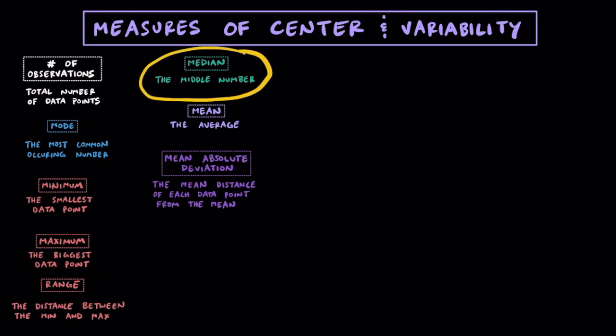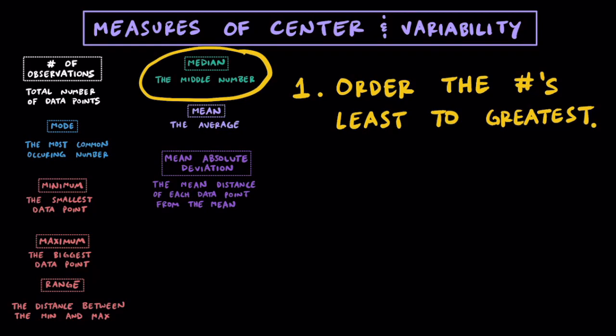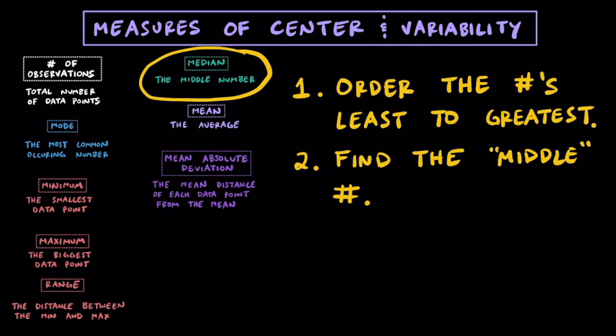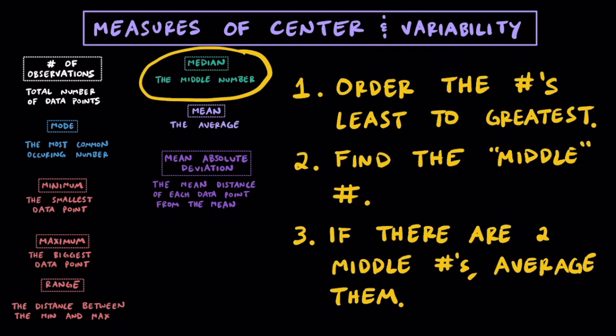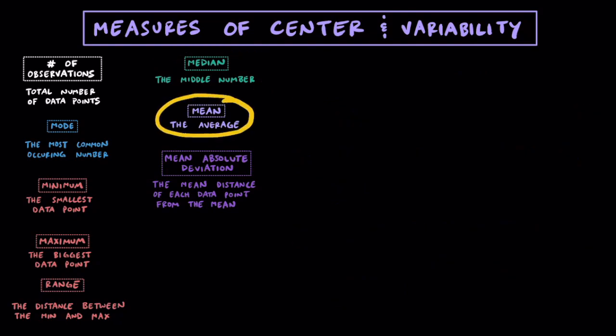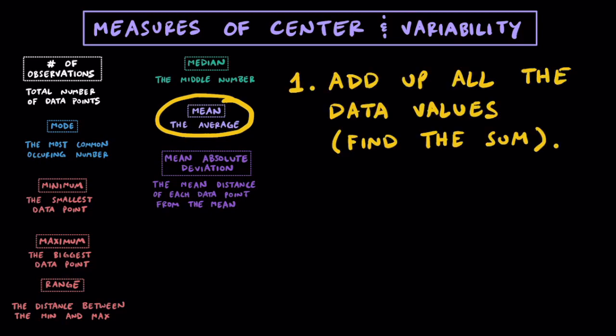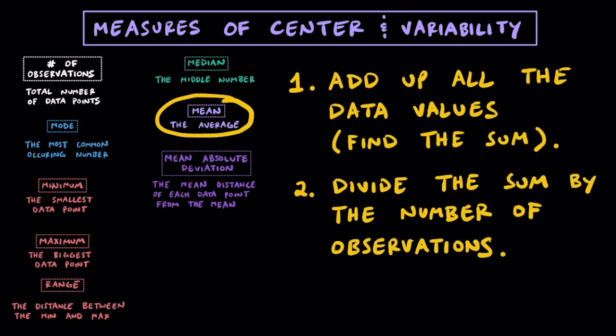To find the median, we're going to have to do a little bit more work. First, we're going to order the numbers from least to greatest or greatest to least. Then we'll find the middle number — typically people cross off numbers on the left and right side until we get to the middle. If you have an odd number of observations, you'll have a middle number. However, if there are two middle numbers, just average them or find the middle between them. To find the mean or the average, first add up all the data values to find the sum, then divide that sum by the total number of observations.